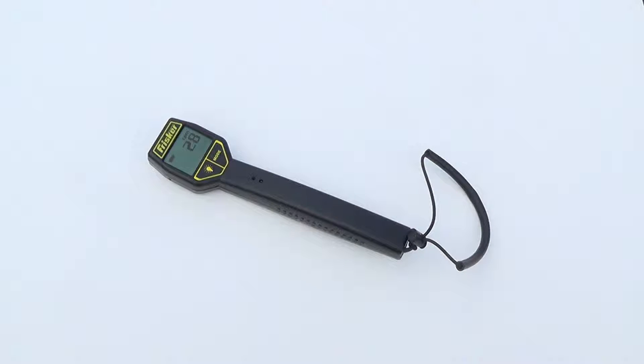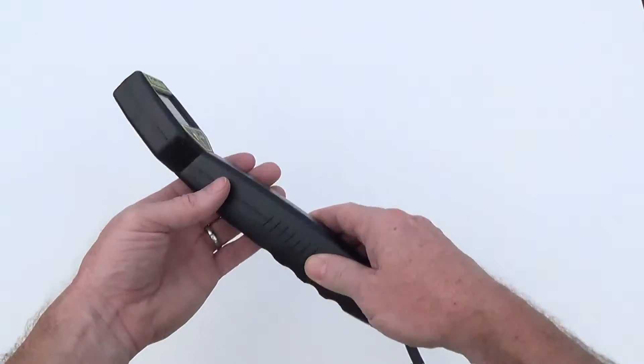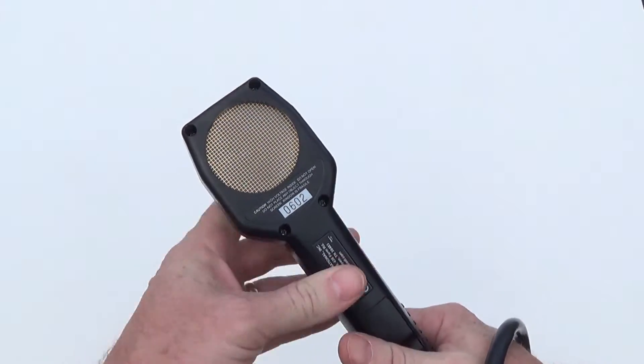Hello and welcome to the quick start guide for the Radiation Alert Frisker brought to you by SE International Inc. Based on the tried and true 2 inch pancake Geiger Mueller detector,